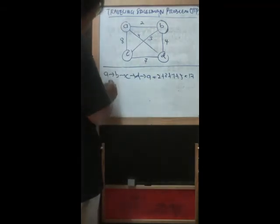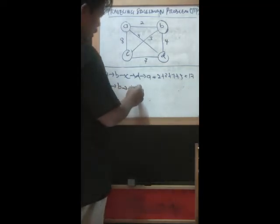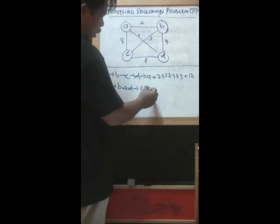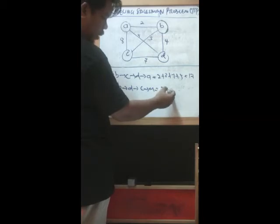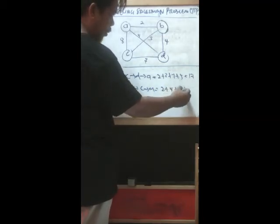Maybe A, the second possibility also through B through D through C and back to A. The cost here is 2 plus 4 plus 7 plus 8. The total is 21.